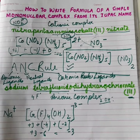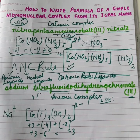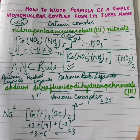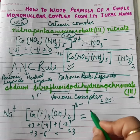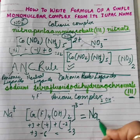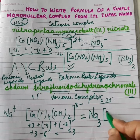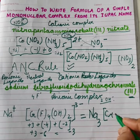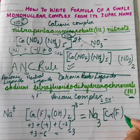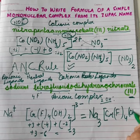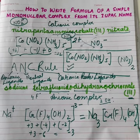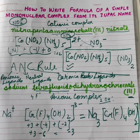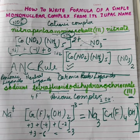Now, to write the final formula of the complex, the interchange of the valencies will take place. So, on interchanging the valencies, the formula becomes Na3, Cr, F4, OH whole twice, bracket closed. I hope these examples are very clear to all of you.